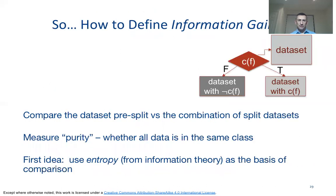Now let's focus on information gain. Information gain talks about comparing the information in the dataset before and after the split, and what we're really interested in is the purity of that dataset. Information gain is not a new concept — it comes from information theory. In data science we borrow the idea of entropy from information theory.